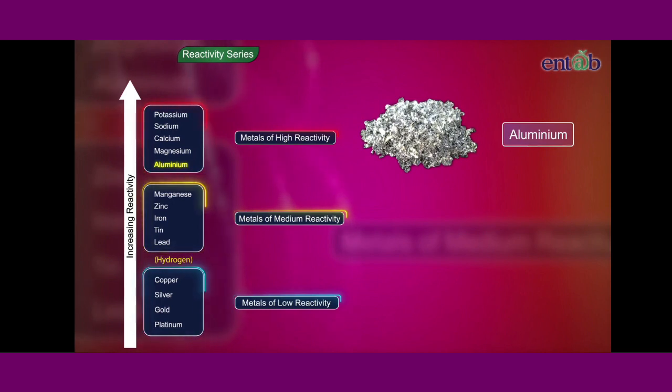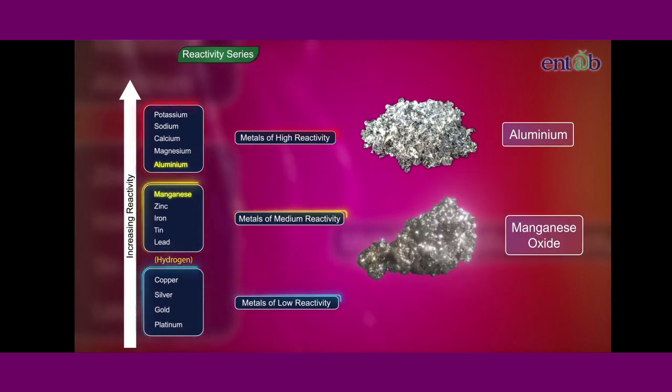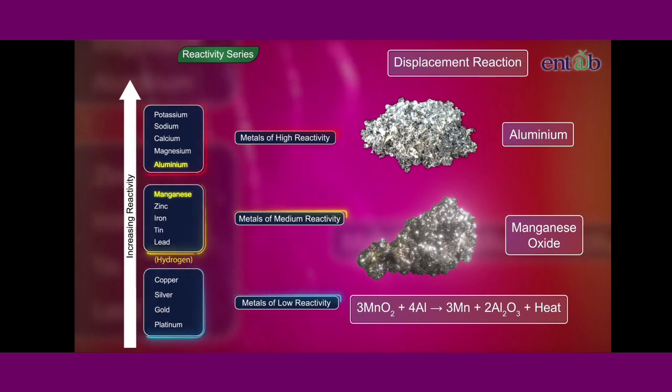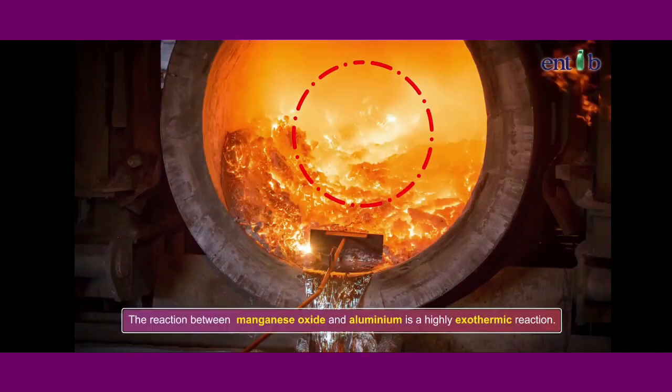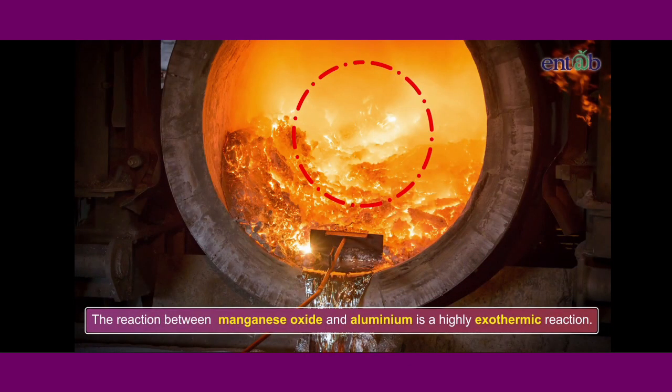Like, aluminium is used to reduce manganese from manganese oxide. This reaction is a displacement reaction between aluminium and manganese oxide. It is also a highly exothermic reaction.